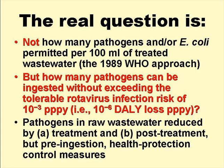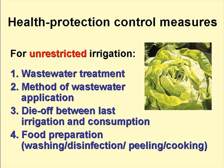The real question is not how many pathogens or E. coli are permitted in the treated wastewater — this was the approach adopted in the 1989 WHO guidelines — but how many pathogens can be ingested without exceeding the tolerable rotavirus infection risk of 10 to the minus 3 per person per year. Pathogens in the raw wastewater are reduced by treatment, but also, and this is very important, by post-treatment health protection control measures. These control measures, apart from wastewater treatment, are the method of wastewater application — specifically drip irrigation — and the pathogen die-off that occurs between the last irrigation and consumption.